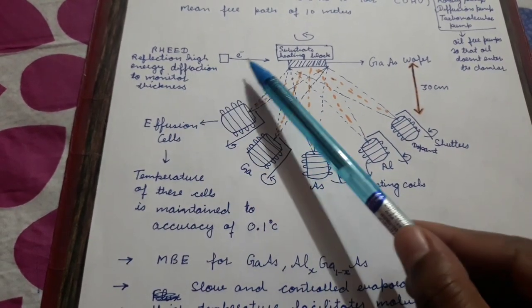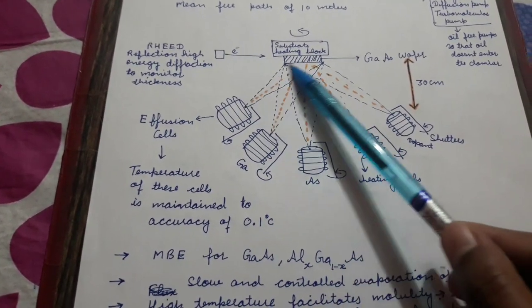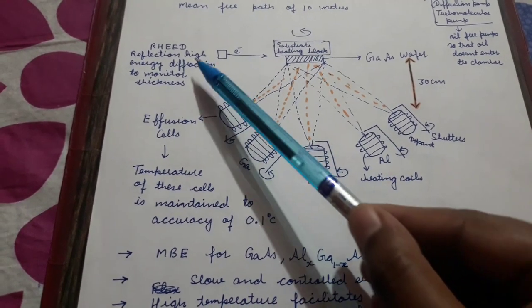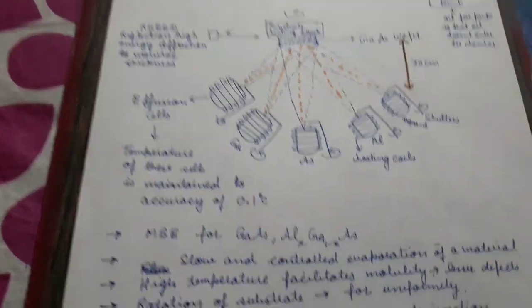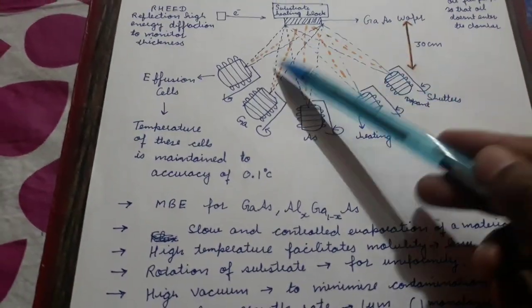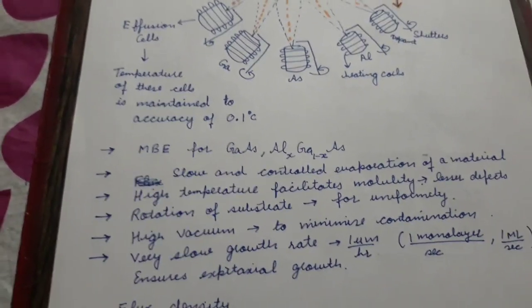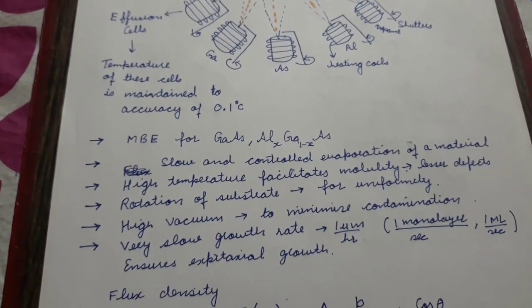Electrons are thrown incident on the film so that we know the thickness of the film. Rotation of the substrate also takes place for uniformity. High vacuum is required to minimize contamination.